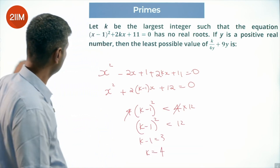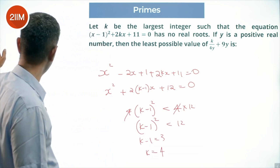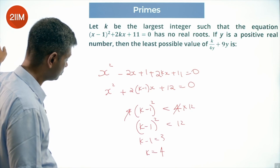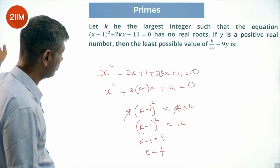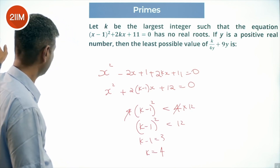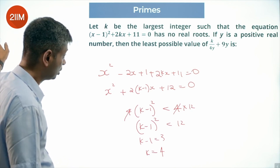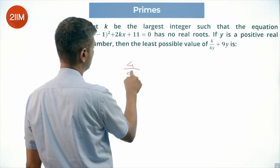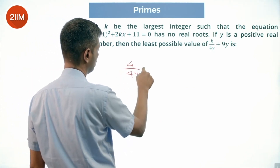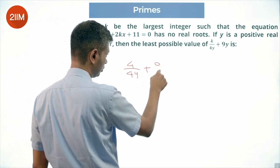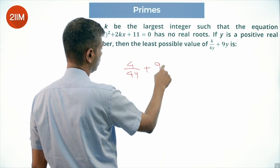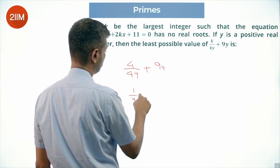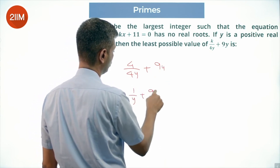y is a positive real number. The least possible value of k divided by 4y plus 9y becomes 4 divided by 4y plus 9y, which simplifies to 1 divided by y plus 9y.